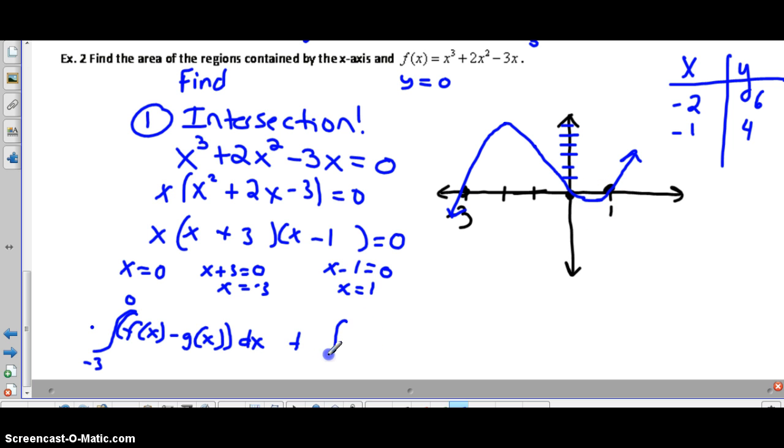Our second intersections, the a and b value, will be 0 and 1. We will find the integral from 0 to 1, and again it's our f(x) minus g(x). But in this section our f(x) will be the x-axis and our g(x) will be our x³ + 2x² - 3x. Let's go ahead and type that in.